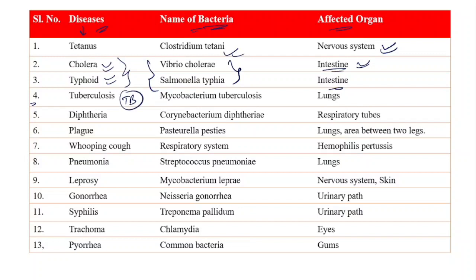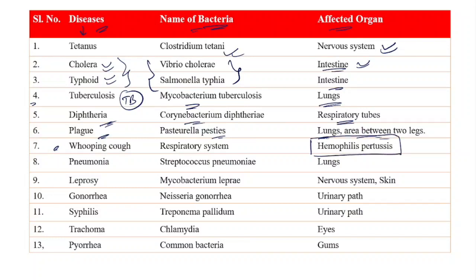Number five: Diphtheria is caused because of Corynebacterium diphtheriae and it attacks the respiratory tubes. Number six: Plague is caused because of Pasteurella pestis and it affects the lungs in the initial stage, later attacking the lymph nodes in the leg area. Number seven: Whooping cough is caused because of Haemophilus pertussis and it affects the respiratory system.